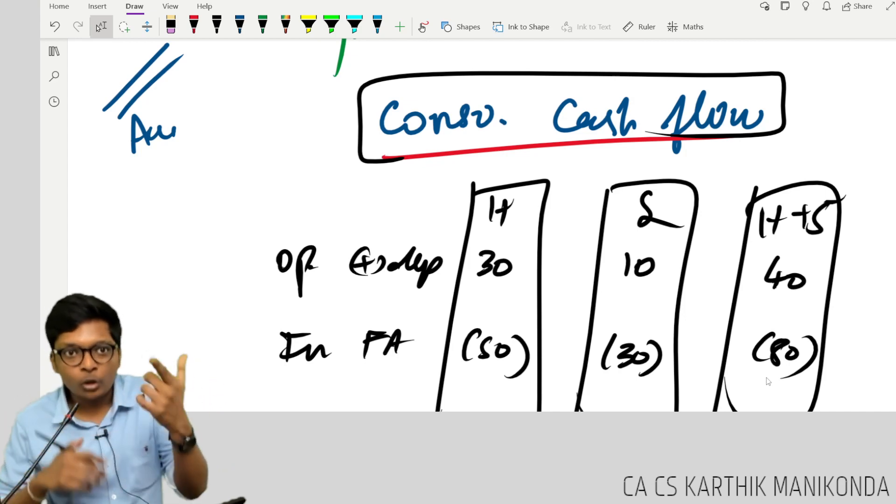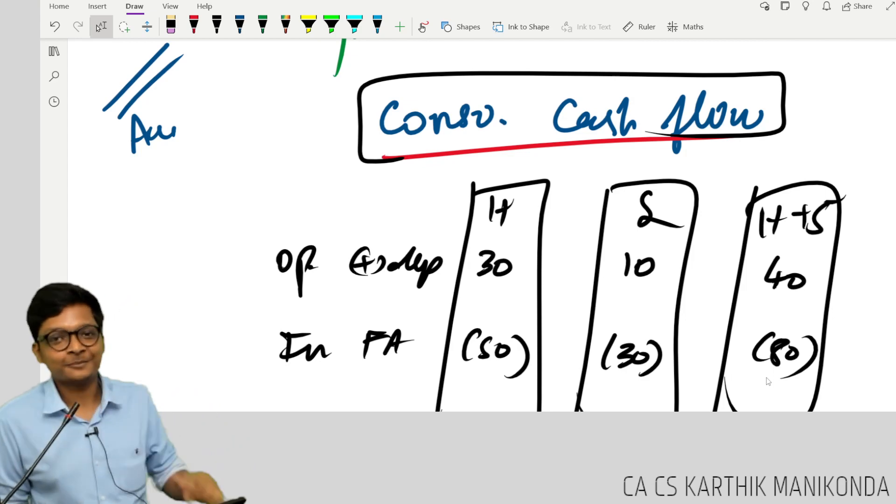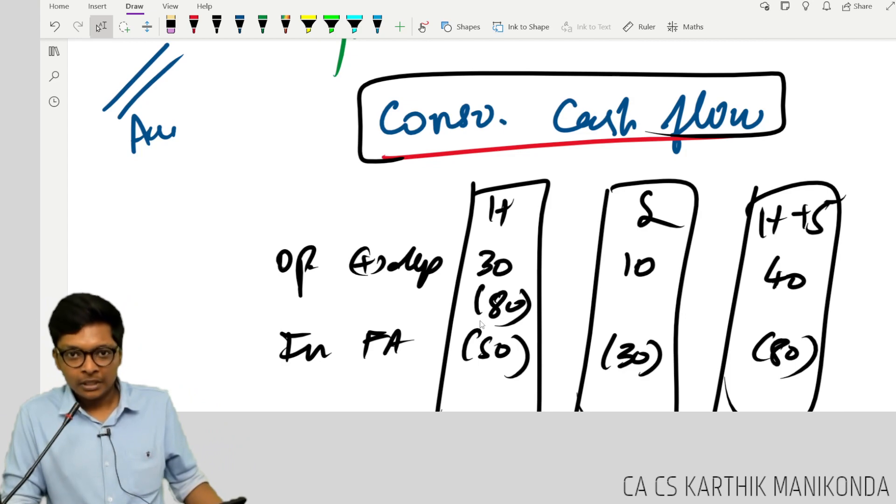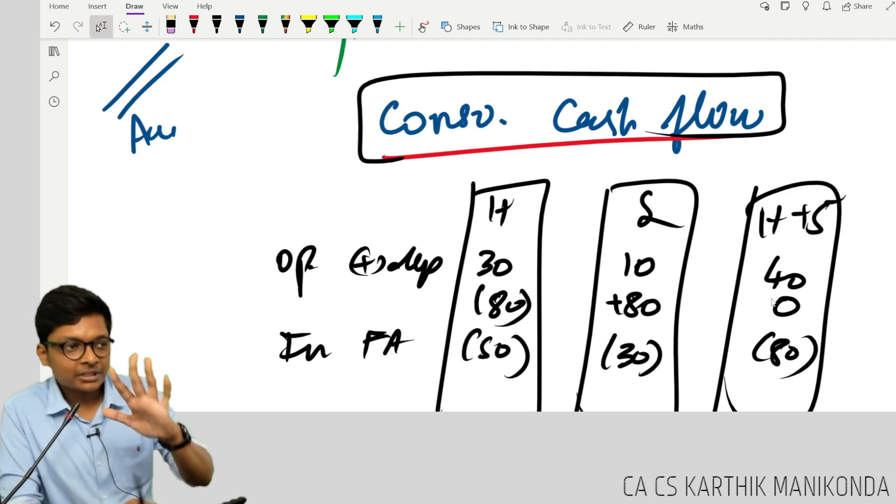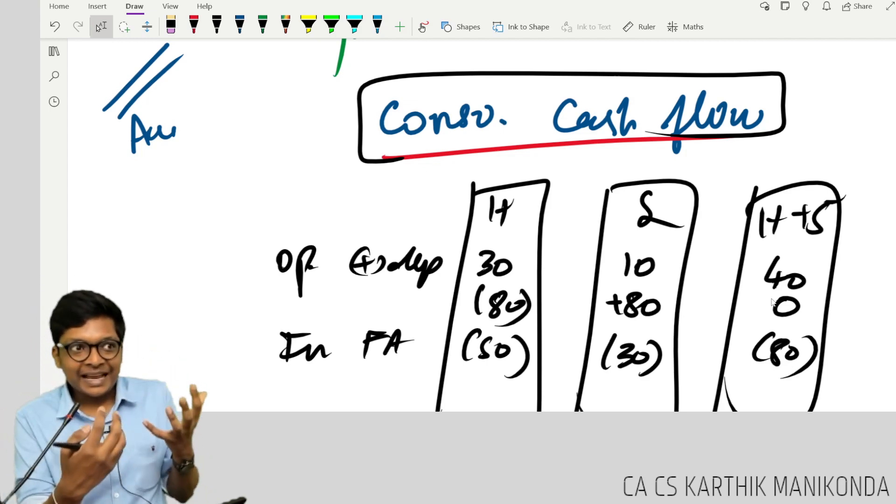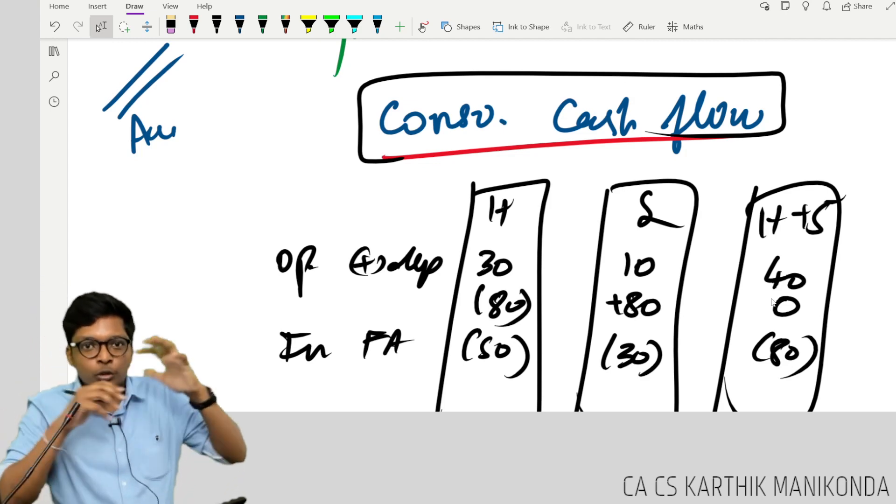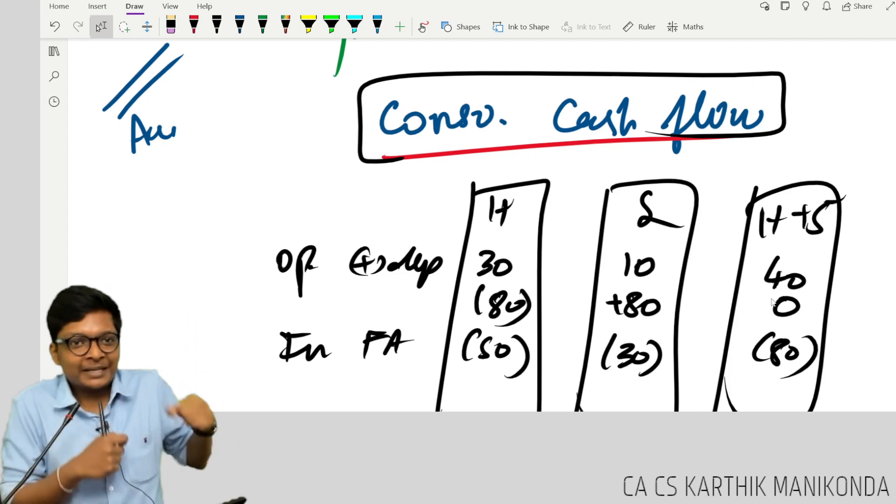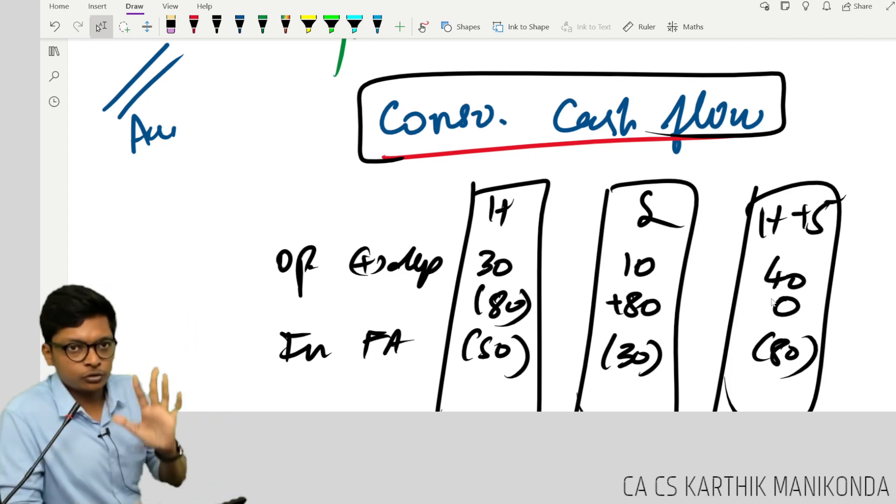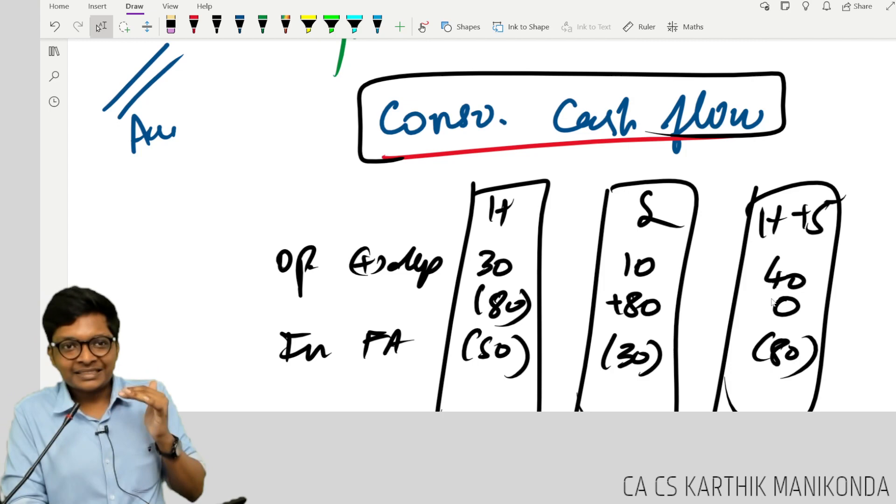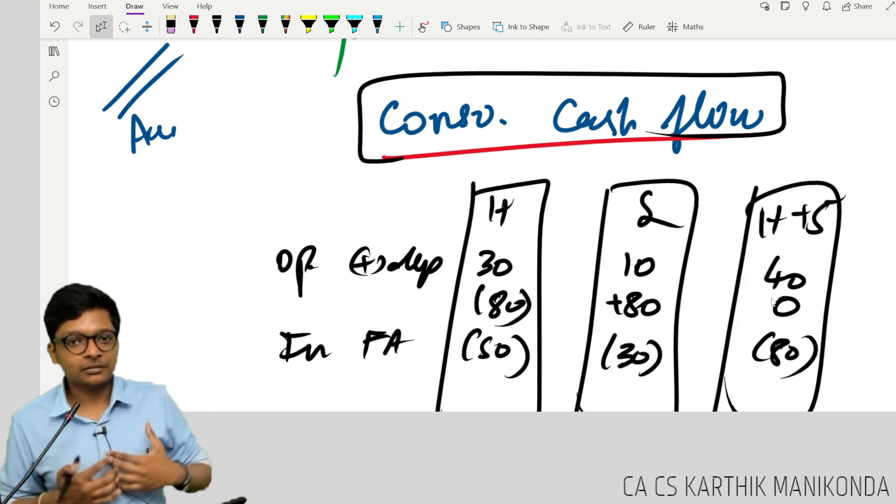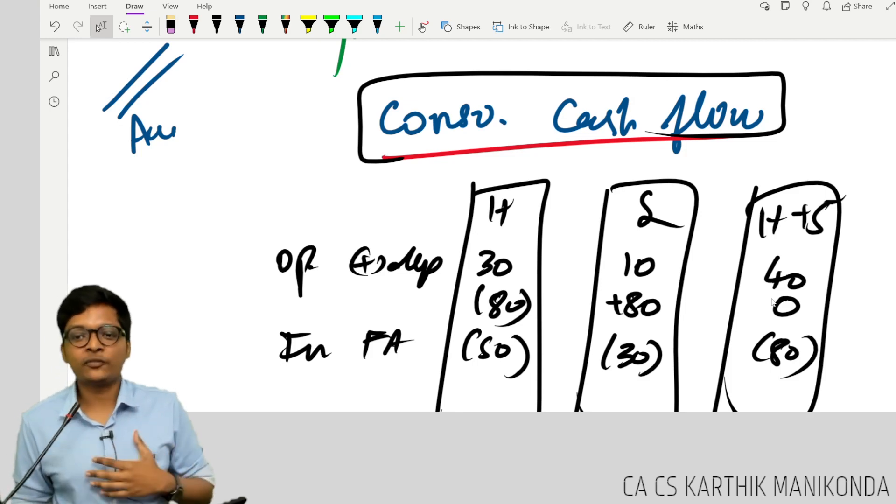So what if there are transactions between holding and subsidiary? Holding gave a loan to subsidiary. So for holding it is minus 80, for subsidiary plus 80, here it will become zero. It is cash flow for the group as a whole, how much cash is coming in going out. Within the group, it is like taking from one pocket and keeping another pocket, so it gets set off. Consolidated cash flow is nothing but line by line addition, that's it. There is no other adjustments for that.